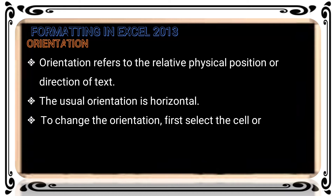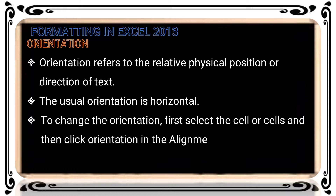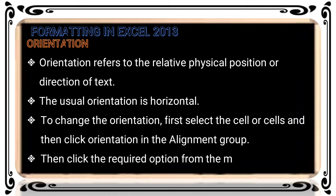To change the orientations, first select the cell or cell range. Then click Orientation in the Alignment group. In the orientation options, you can apply the orientation to a single cell or more than one cell range. Then click the required position from the menu that appears. Choose the required submenu option on an alignment basis for the orientation that fits you.